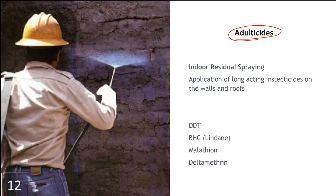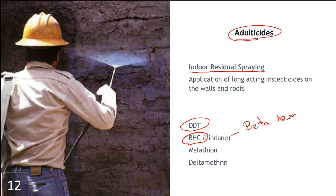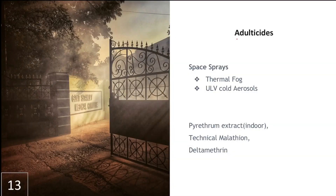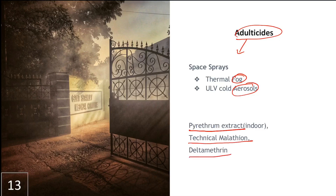Adulticides are for adult mosquitoes, so they are sprayed into the atmosphere. The main application is indoor residual spraying — spraying of insecticides onto the walls and roofs of homes. Chemicals used include DDT, BHC (beta-hexachlorocyclohexane), malathion and deltamethrin. Space sprays are adulticides in the form of fogs or aerosols; chemicals used include pyrethrum extract, technical malathion and deltamethrin. These are applied near hospitals and whenever there is an outbreak of epidemics.